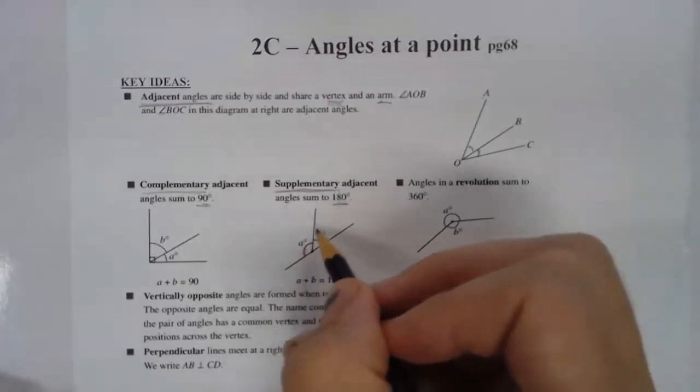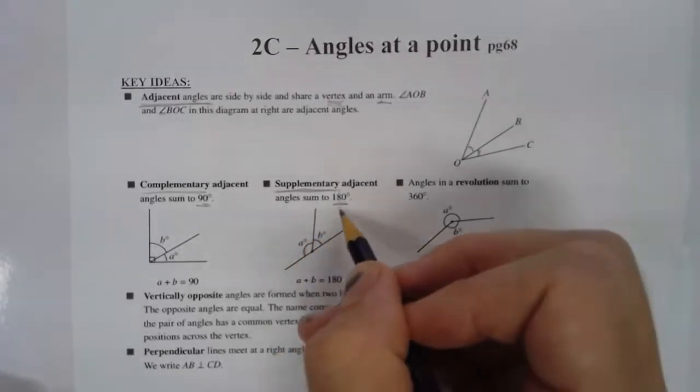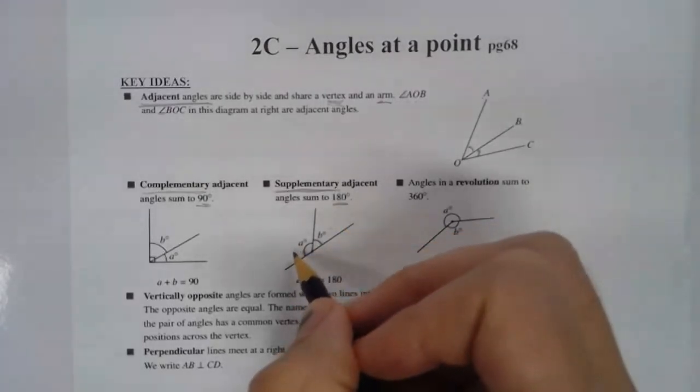If you know the angle of, for example, B, and you know its measurement, subtract that from 180, and you're going to get A.